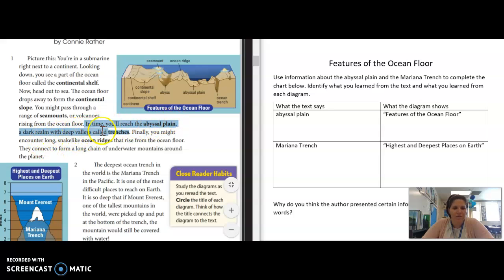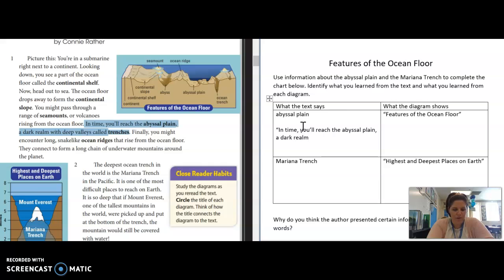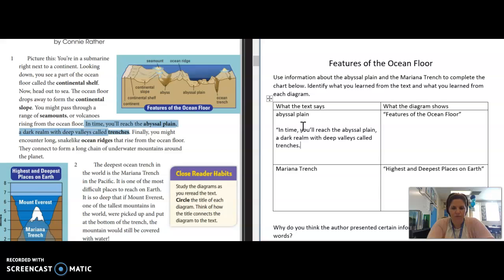In time you'll reach the plane, a dark realm with very deep valleys called trenches. So I guess I'm going to reach this plane in the Mariana Trench. If I were going to complete the graphic organizer, I would include exactly that information: in time you'll reach the abyssal plane, a dark realm with deep valleys called trenches. So I'm going to reach this plane and it's a very dark area with deep valleys that are called trenches.